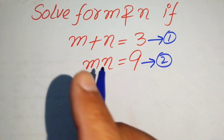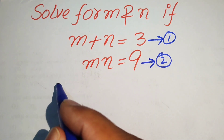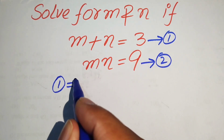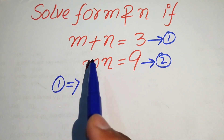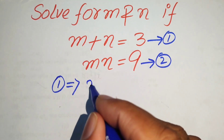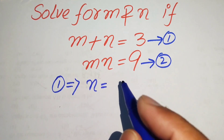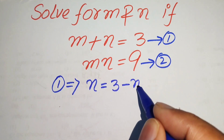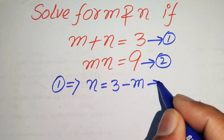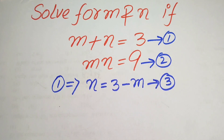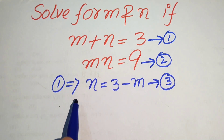First we focus on equation number one. We move m to the right hand side, giving us n equals 3 minus m. We call this equation number three.